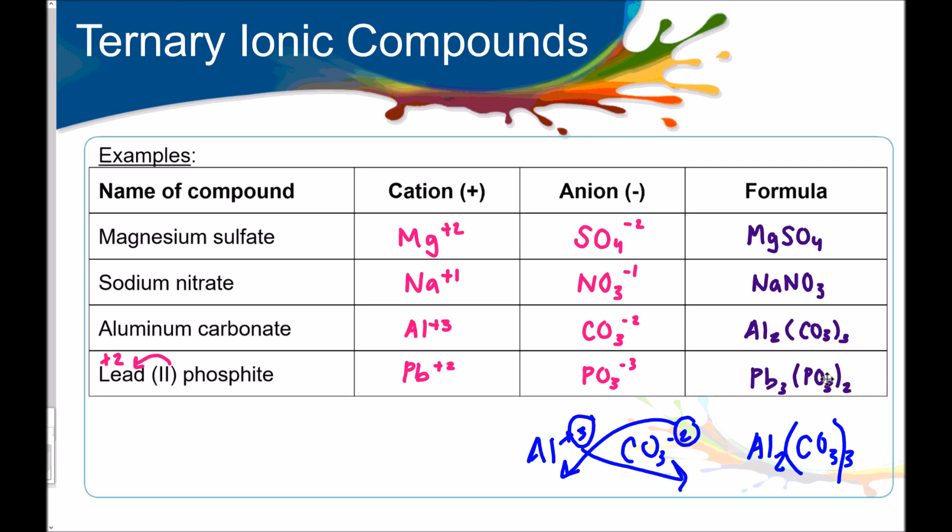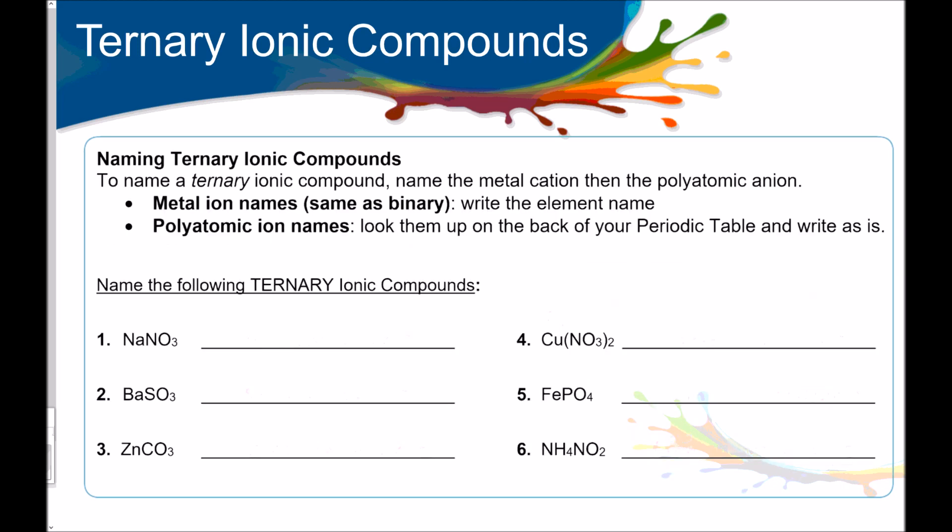If you are lost, pause the video, raise your hand, ask for help. But if not, let's continue. Naming ternary ionic compounds. To name a ternary ionic compound, name the metal cation, then the polyatomic anion. Metal ion names are the same as binary. You just write the element name. And then, for polyatomic ion names, you look them up on the back of your periodic table, and you just write them as is. This is pretty easy.